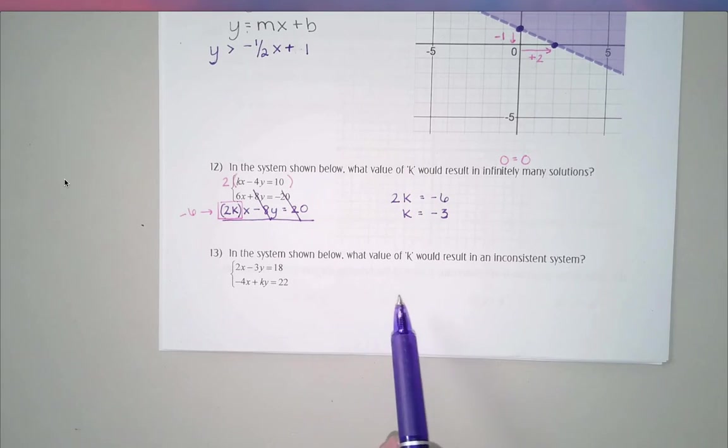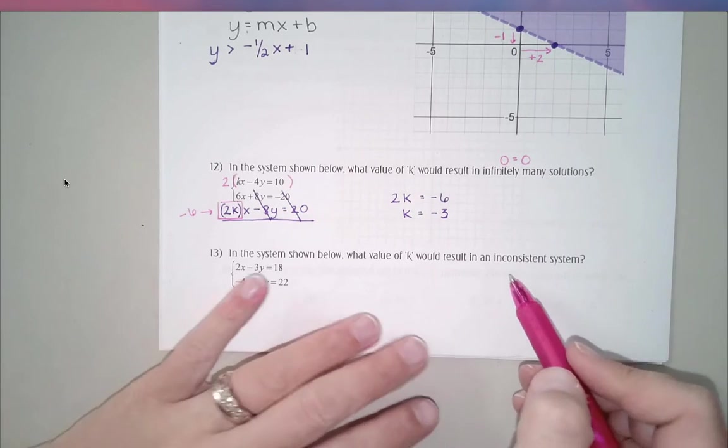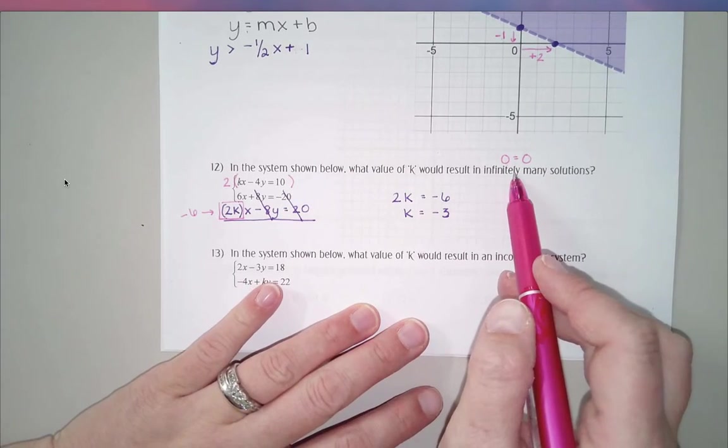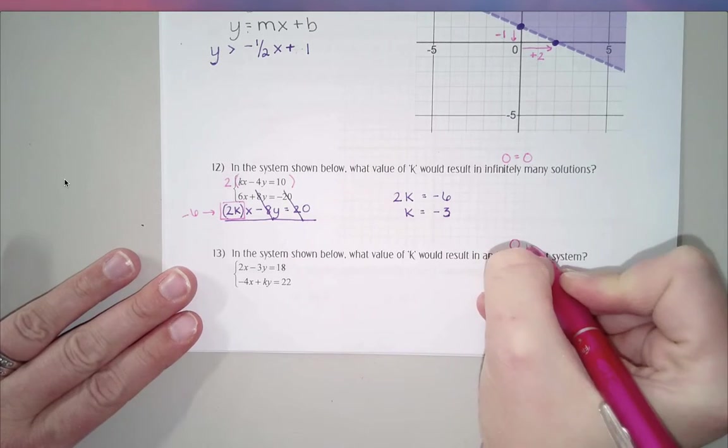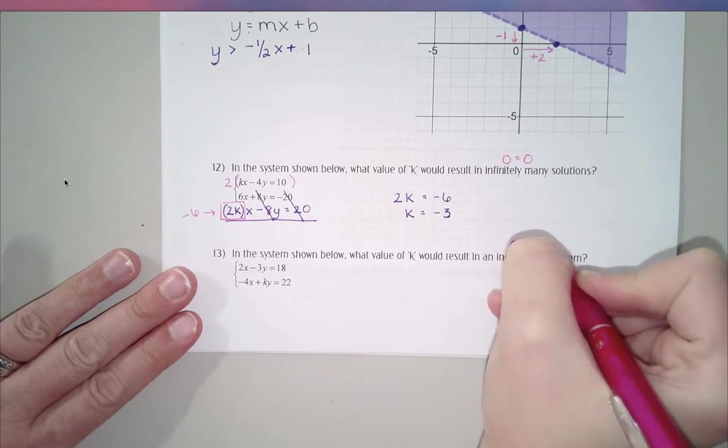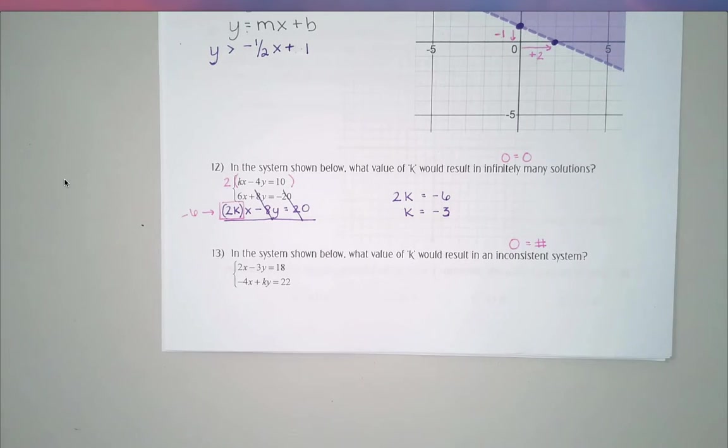In the system below, what value of k would result in an inconsistent system? So inconsistent means no solution as opposed to infinitely many. Really though, the mechanics of this question are really similar to the one we just did. Because what we want to have happen now is we want to get 0 equals something other than 0. We want 0 equals some number. That's how we're going to get this to be inconsistent. But my plan is going to be exactly the same. I'm going to manipulate whatever equation I can, get everything else set to cancel out that's supposed to, and then decide what I want to go in place of k.